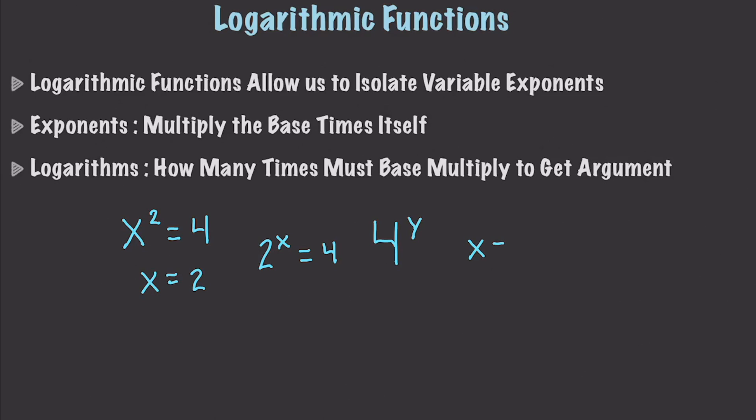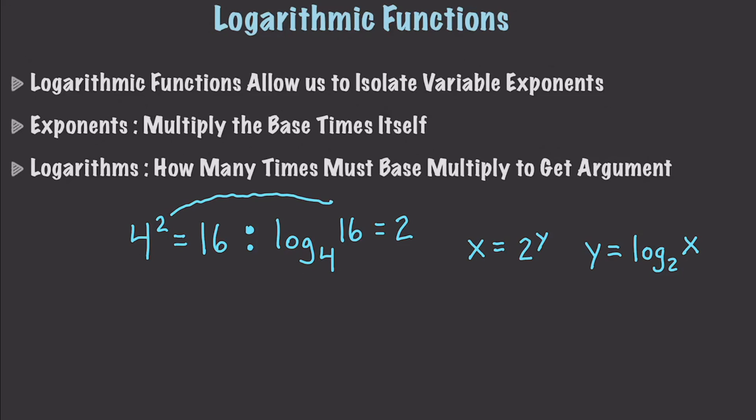x is equal to 2 to the y is going to be the same as y is equal to log base 2 of x. And to put it another way, let's say if we have 4 squared is equal to 16, and we had something like log to the 4, 16 is equal to 2, and how these different values would move around. Basically, the 2 from here is going to go right here. 16, of course, goes here, and the 4 is going to come in right there.